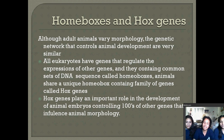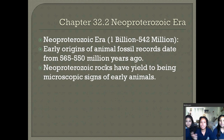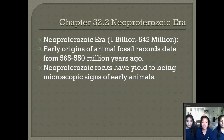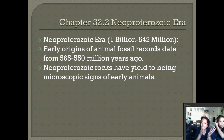The next section is 32.2, which talks about eras and how animal life became. The first era was the Neoproterozoic era, which was 1 billion to 542 million years ago. Early origins of animal fossil records date from 565 to 550 million years ago. Rocks from this era yield microscopic signs of early animals.